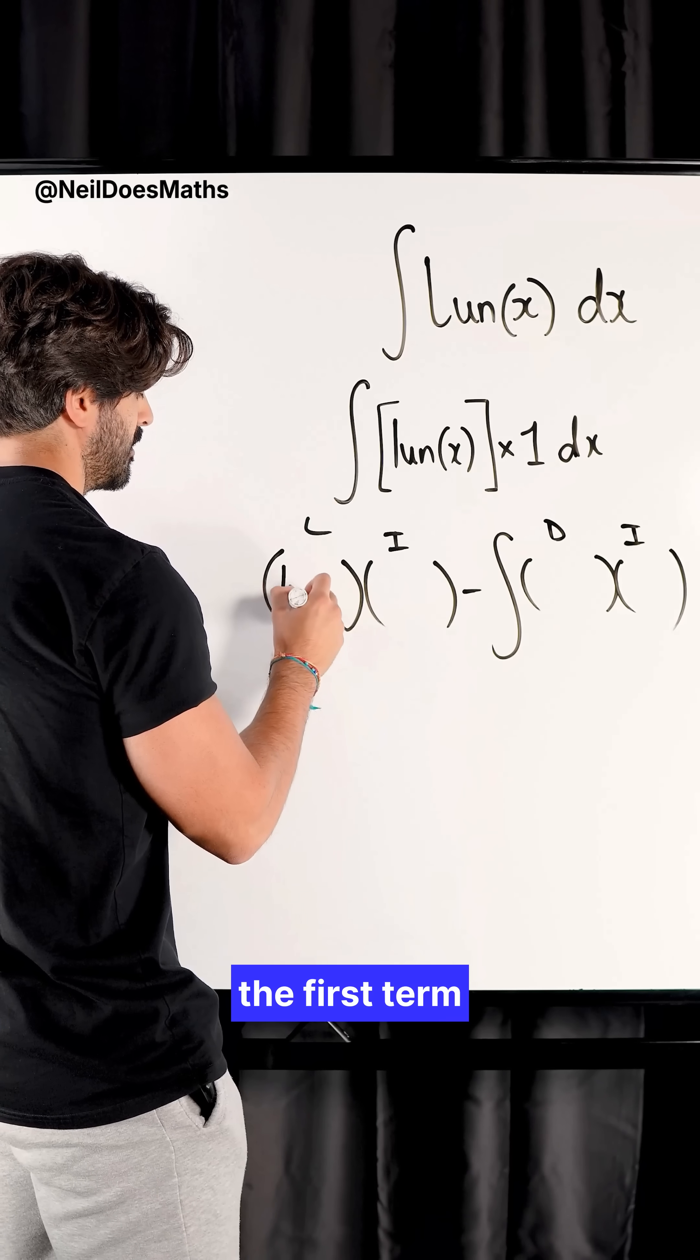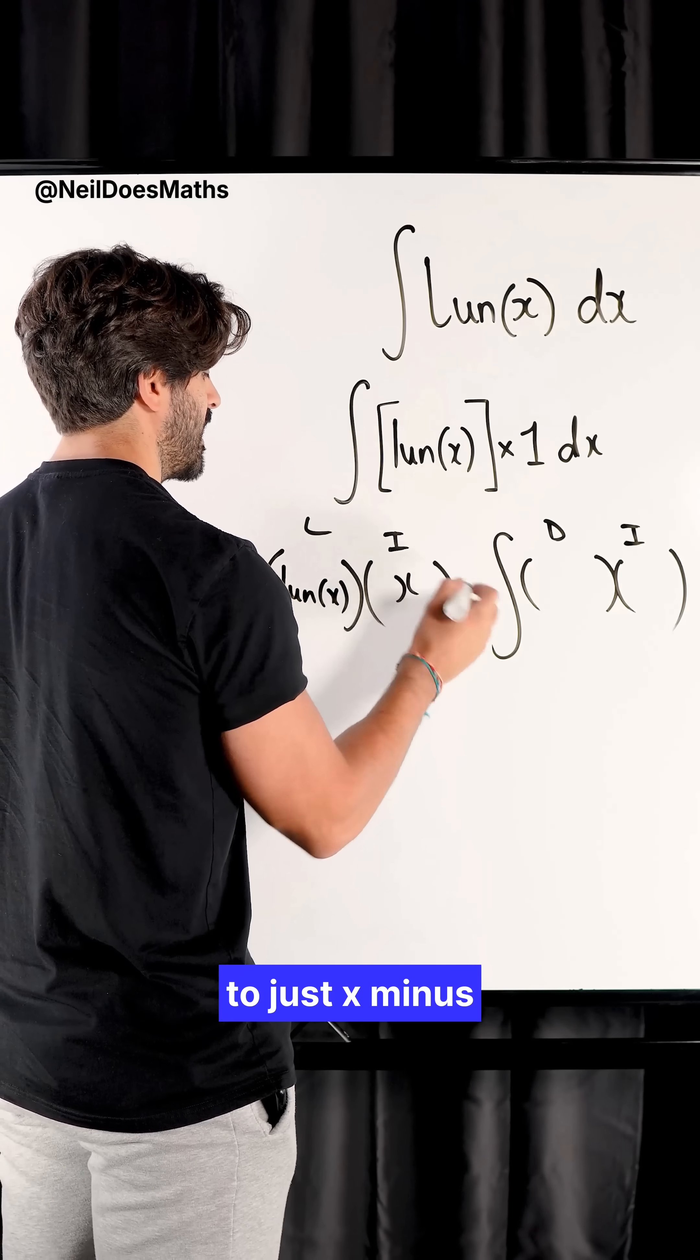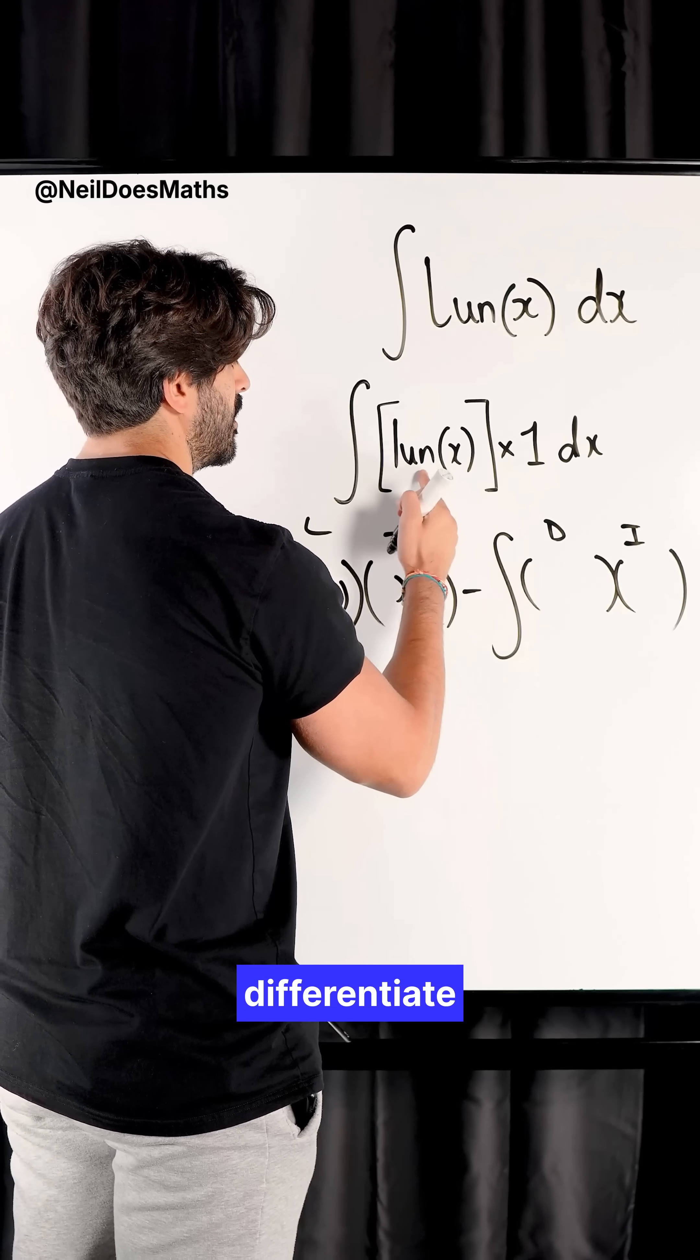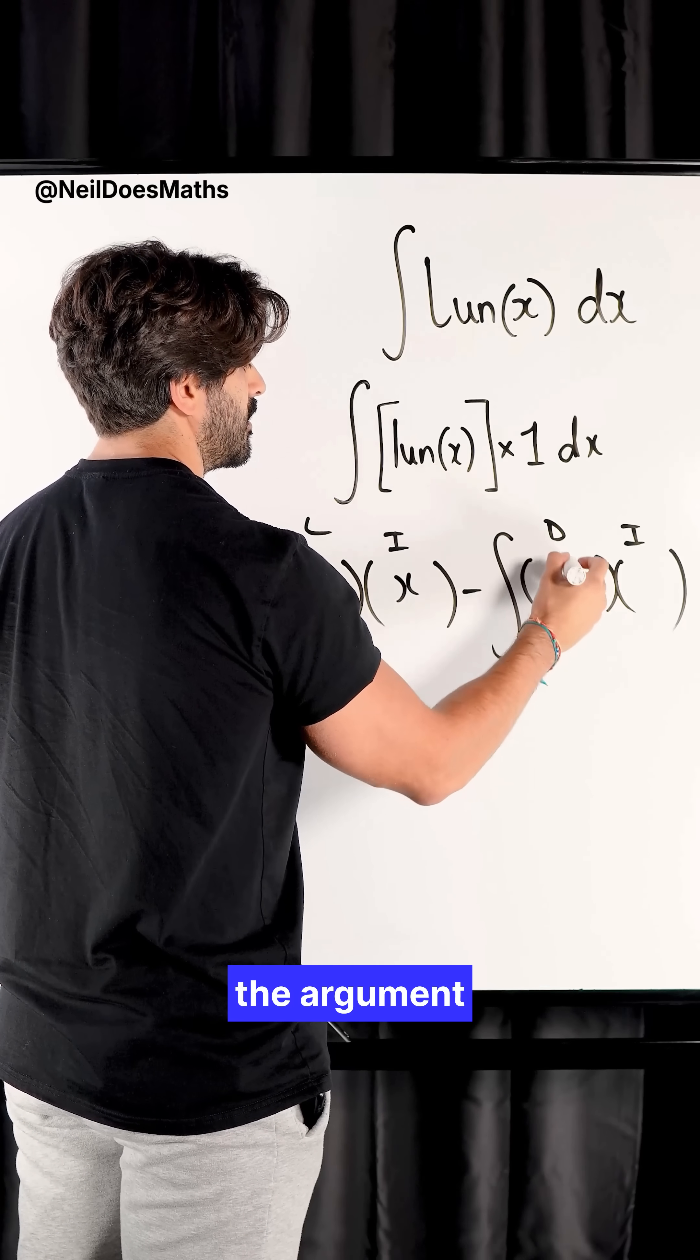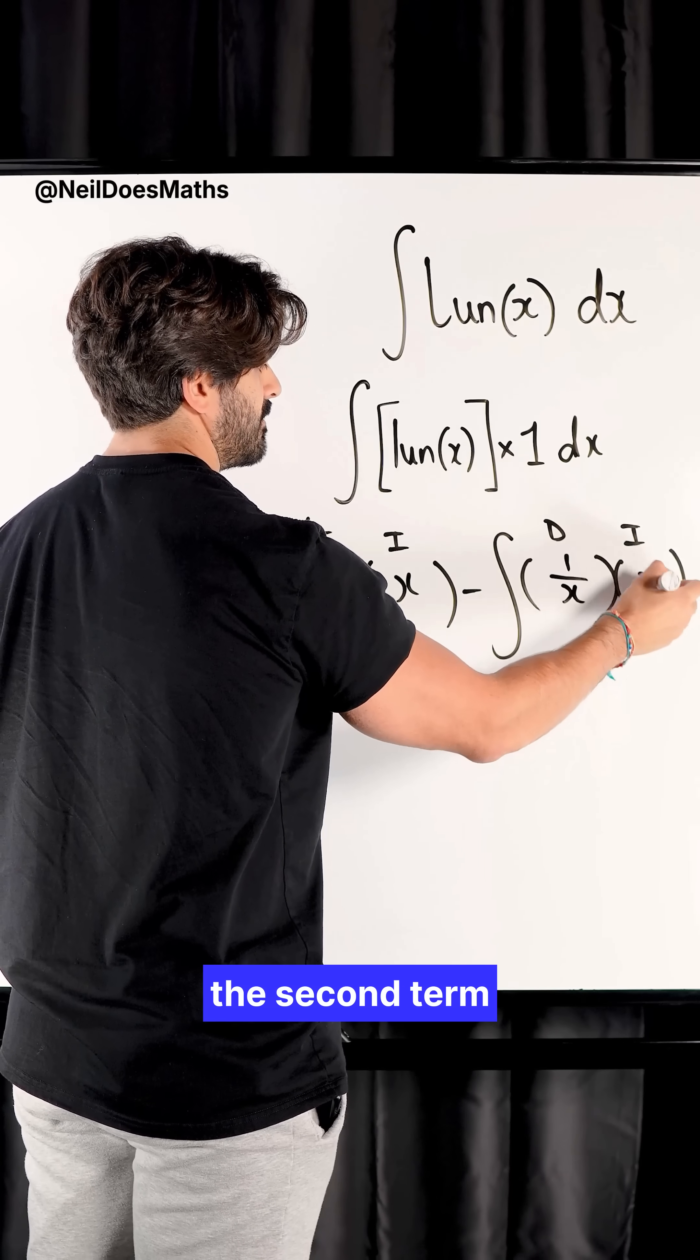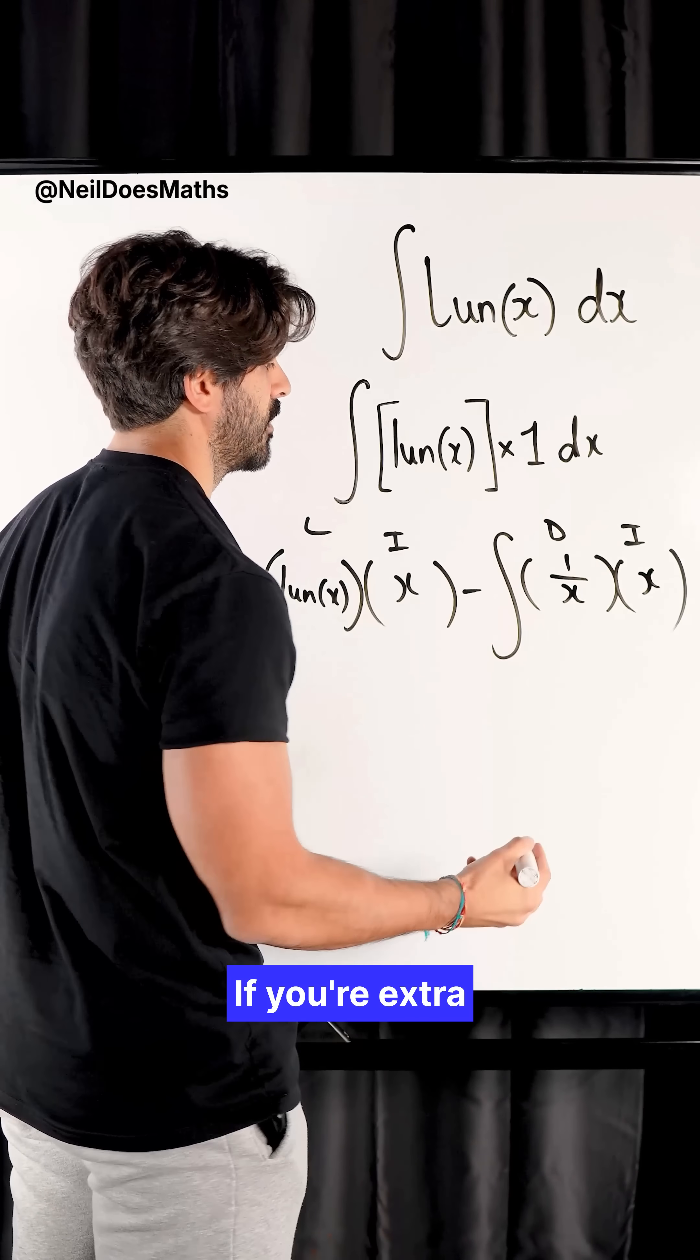So you leave the first term, ln. You integrate the second. One integrates to just X minus differentiate ln. To differentiate ln, you just reciprocate what's inside the argument. That's one over X. Then we integrate the second term, X. These two things are always the same. You could put dx here if you're extra.